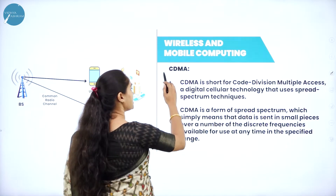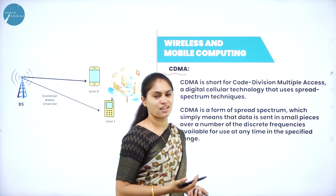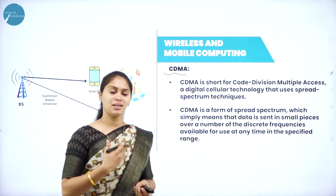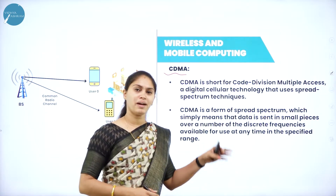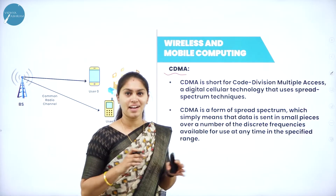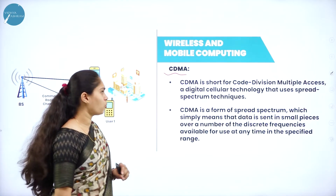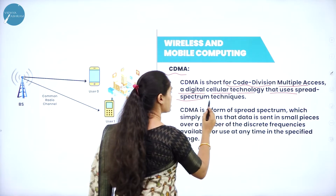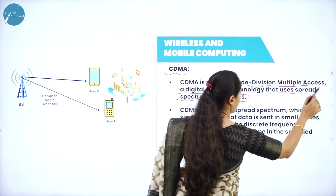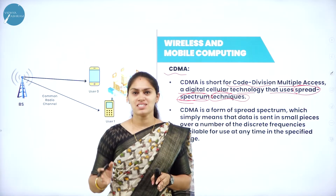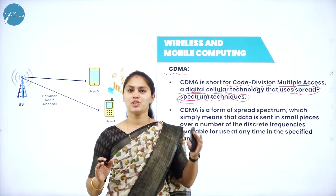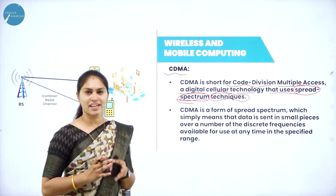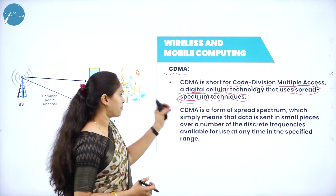Next is CDMA. Recalling older days, phones like MTS could only use their own built-in SIM card — a dedicated slot. CDMA works similarly. CDMA stands for Code Division Multiple Access — a digital cellular technology that uses spread spectrum techniques. The data packets to be sent from sender to receiver are spread across the network like a spread spectrum.